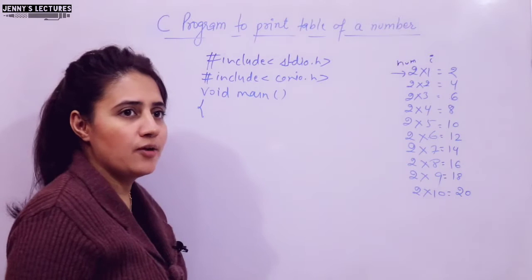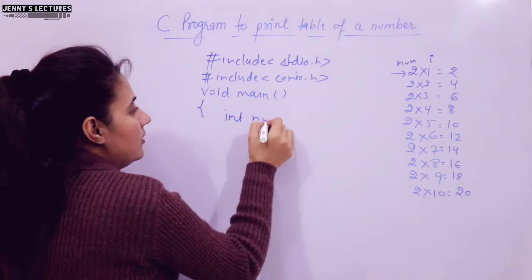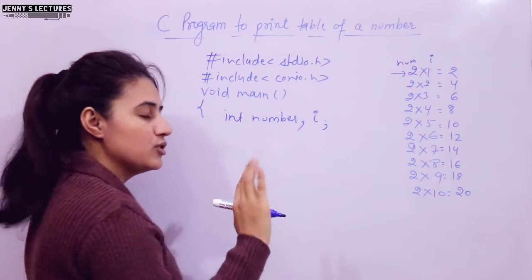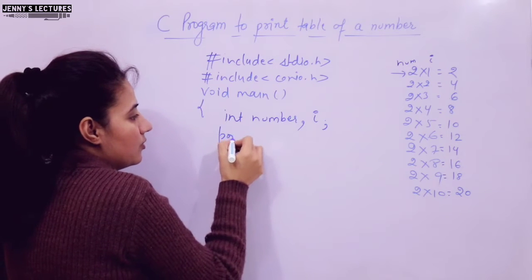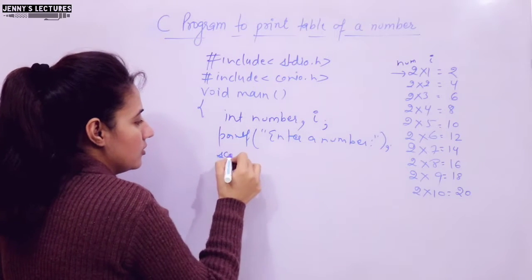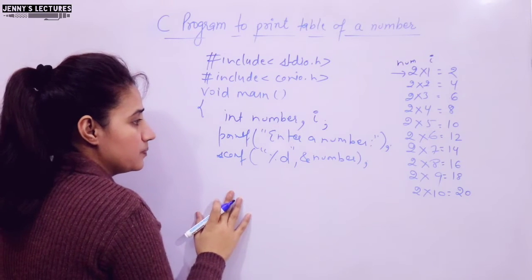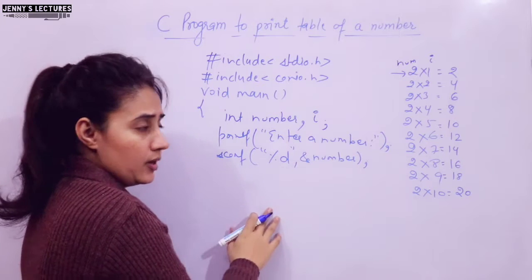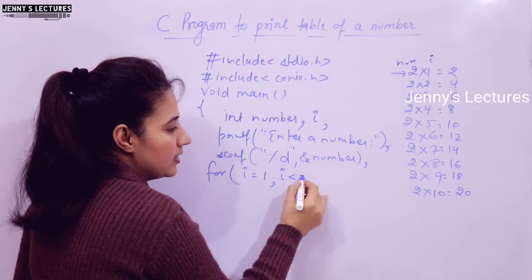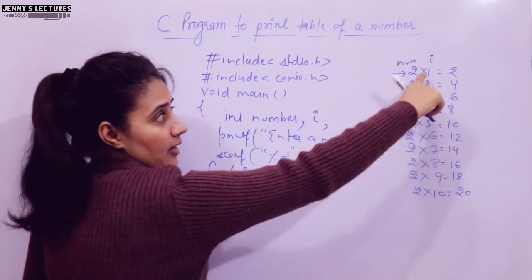To take input from the user, declare a variable — int number — because data can only be stored in a variable. I'm taking two variables: number and i for the loop. We ask the user 'enter number' using printf, then take input using scanf. The user enters a number. Now put the for loop: i is initialized from 1, termination condition is i less than or equal to 10, and once i becomes 11 the loop terminates.